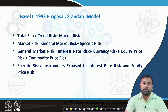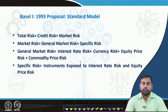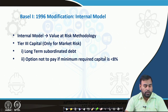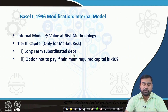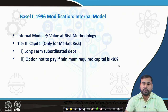Considering the importance of other risks, market risk was added. The source of market risk is fluctuations in interest rates, currency risk, and equity prices. A Value at Risk (VAR) model was developed to calculate this. A tier 3 capital was added only for adjusting market risk, where long-term subordinated debt is considered as tier 3 capital, with the option not to pay if the minimum record of capital is 8 percent.